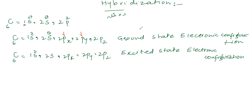We have a theory called VBT, the valence bond theory. According to VBT, the valency of an atom is equal to the number of half-filled orbitals. In a fully-filled orbital there are two electrons, while a half-filled orbital has only one electron.